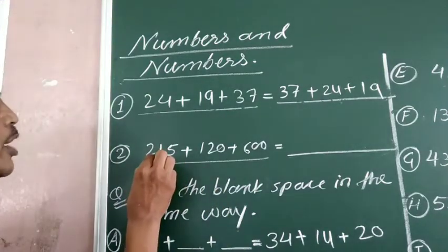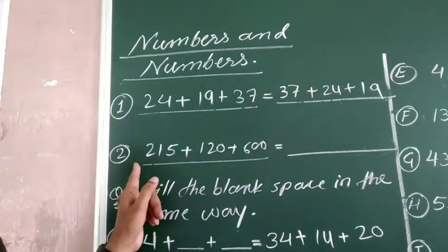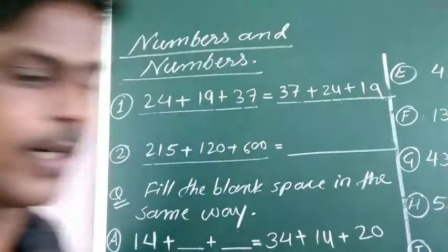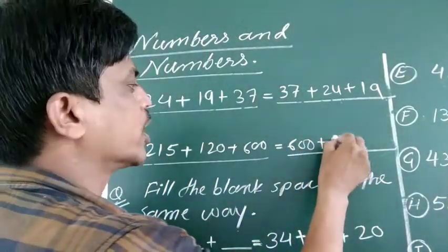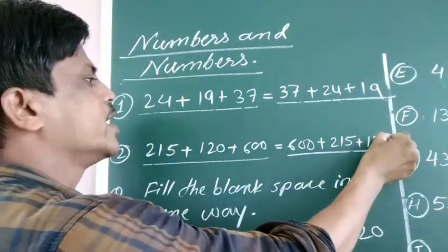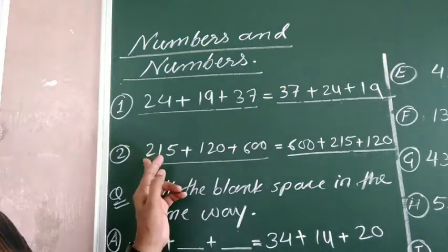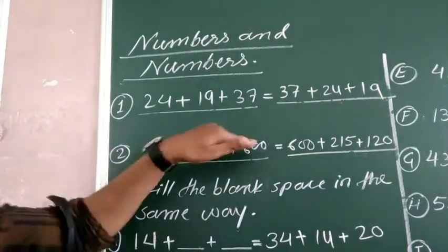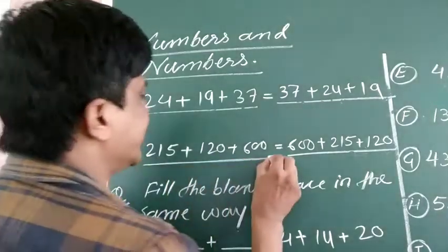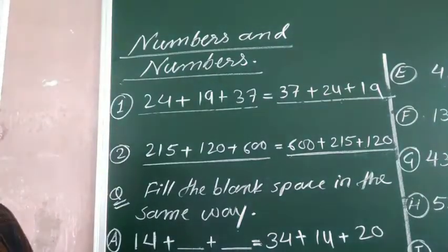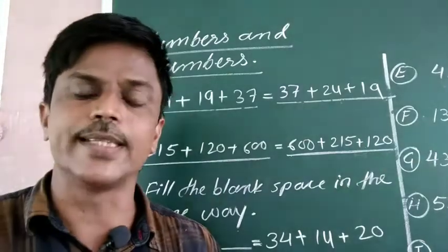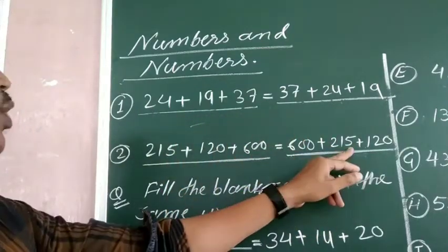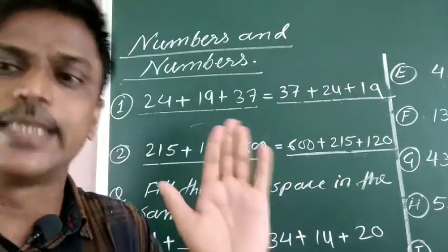Next, see the second example: 250 plus 120 plus 600. Now look at the next three numbers. The addition of these three numbers equals the addition of the next three numbers. It is definitely equal because the same three numbers are used — 600, 250, and 120. Only difference is that their position is changed, their position is changed.